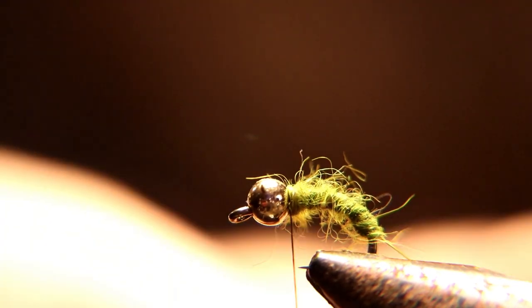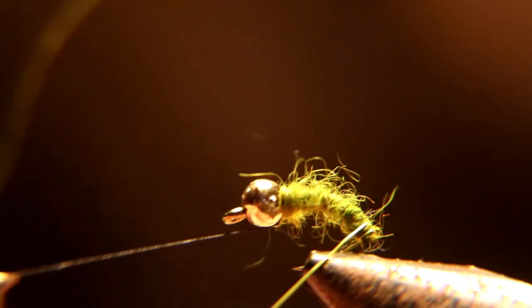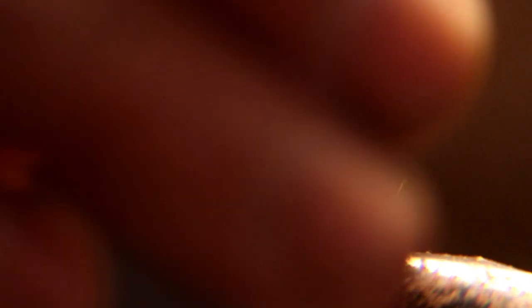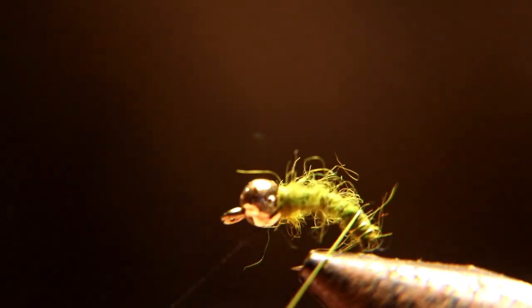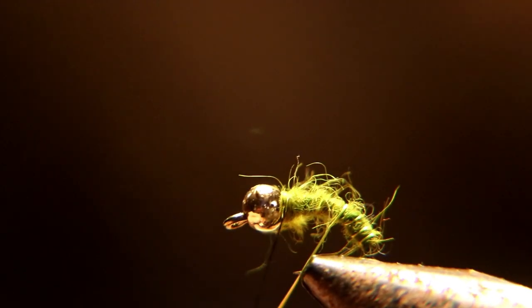Now you want to rib this and try and keep as even wraps as you can. Not that it makes that much difference if it's off, fish don't care, it just looks better I guess. Anyway, you want to wrap this right up to behind the bead, wrapping it the opposite way you did your dubbing.